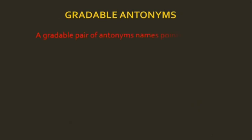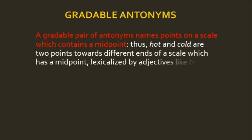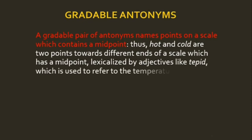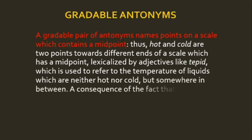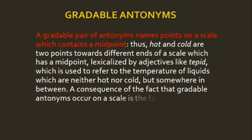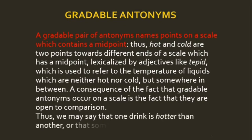A gradable pair of antonyms names points on a scale which contains a midpoint; in non-gradable antonyms we do not have a midpoint. Thus hot and cold are two points towards different ends of a scale which has a midpoint — expressed lexically by an adjective like tepid, which refers to the temperature of liquids that are neither hot nor cold but somewhere in between. Because gradable antonyms occur on a scale, they are open to comparison — we may say one drink is hotter than another, or that some water is less cold than another.